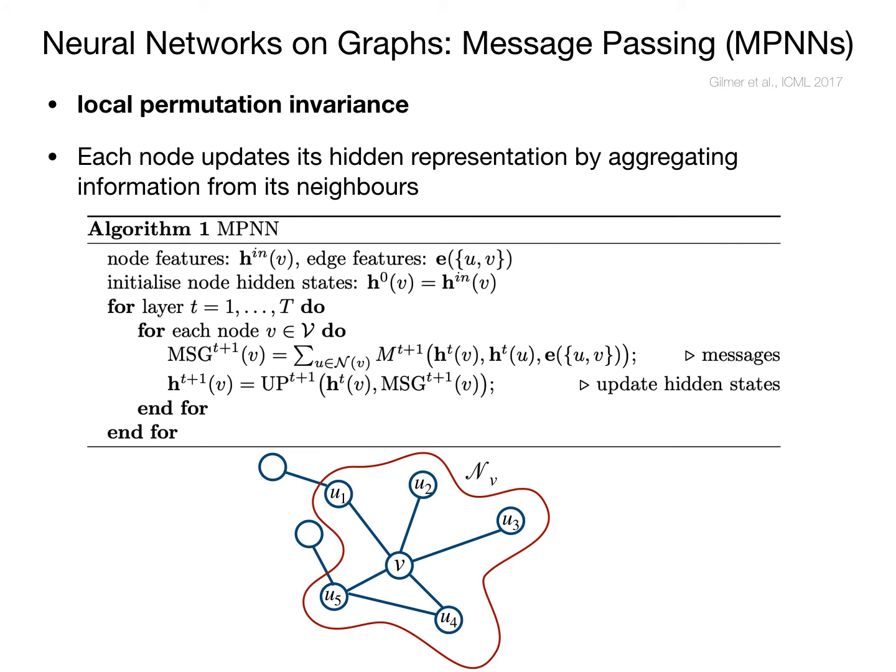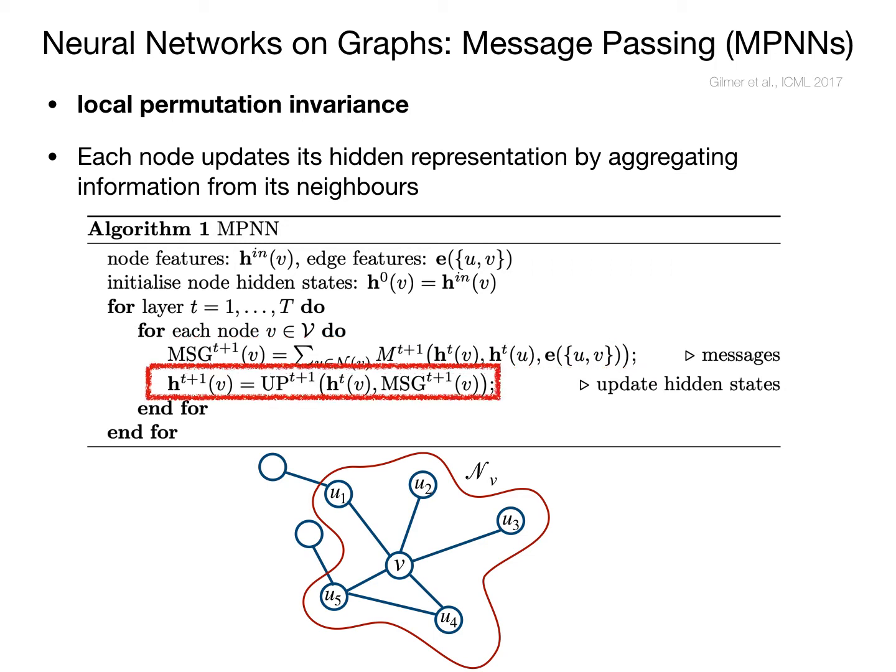Typically, in order to address this issue, graph neural networks are based on a property called local permutation invariance. In particular, each node collects information from its neighbors — hence the locality — and then aggregates it in a permutation invariant way. Here I show a generic message passing neural network algorithm, where each message is transformed by a learnable function m and then aggregated through a summation operator which guarantees the permutation invariance. Then the nodes' hidden representations are updated by another learnable function.